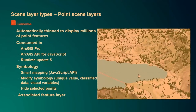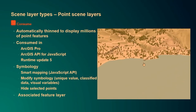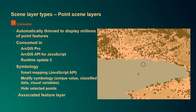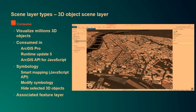Point scene layers are automatically thinned, so you can have millions and millions of point features within a point scene layer. You can consume them in all clients, including Runtime with update 5, and of course you can make changes to the symbology as well as have an associated feature layer. Much more commonly used are 3D object scene layers, created from multi-patch feature classes. You can visualize millions of outer shells of buildings — the most common use case — though it could be any 3D object. I can also create a 3D object scene layer with an associated feature layer that allows me to maintain the data, and I can change the appearance, hide specific features, and maintain them.